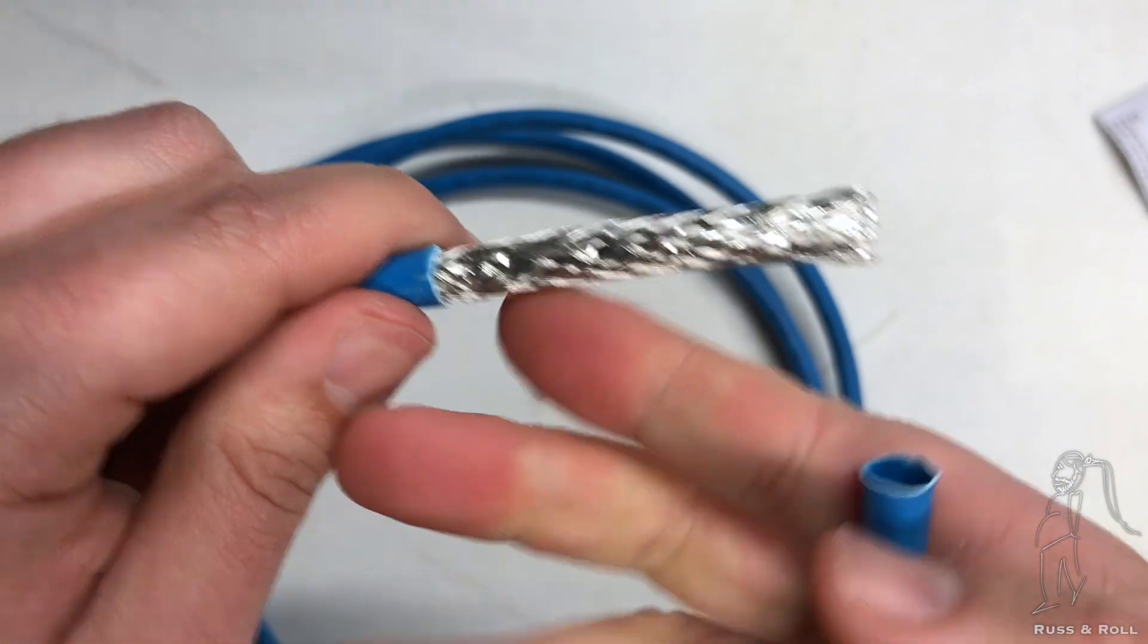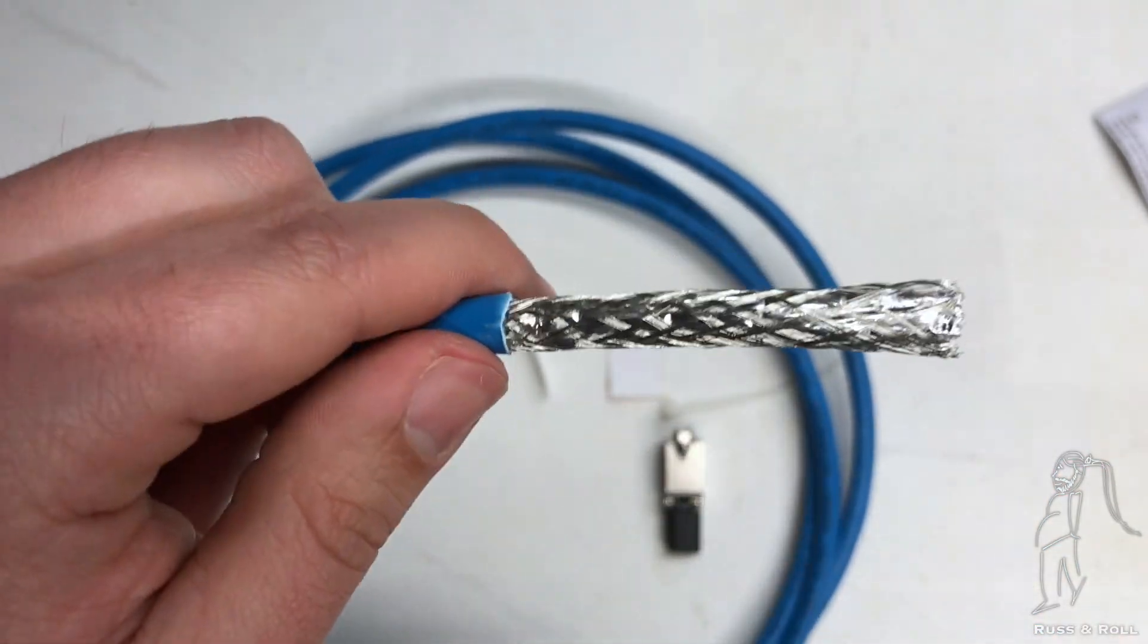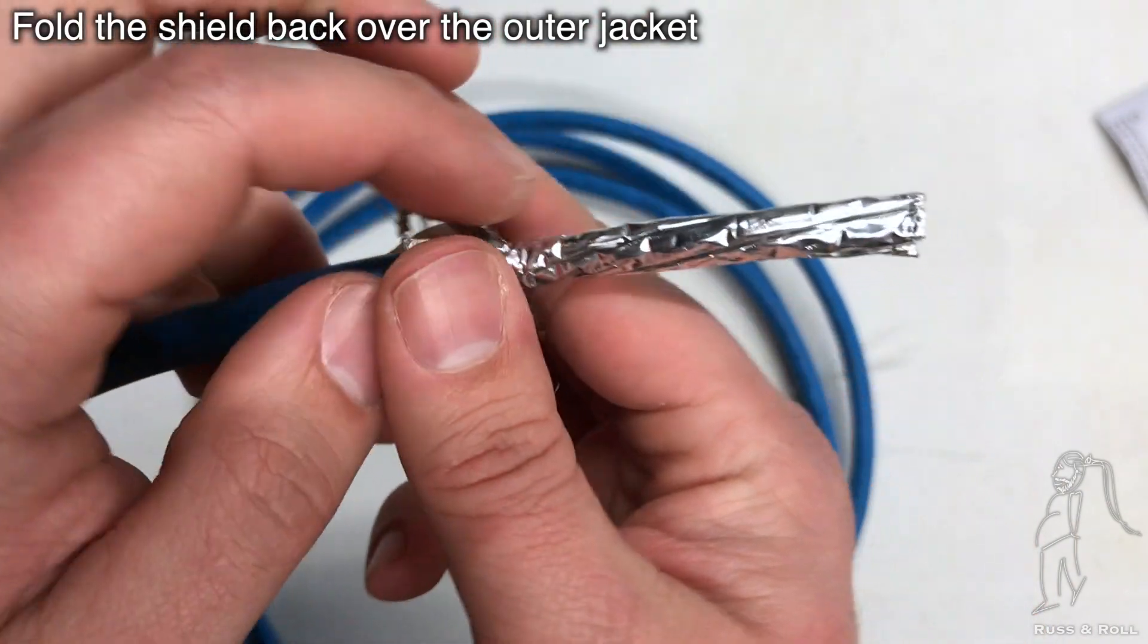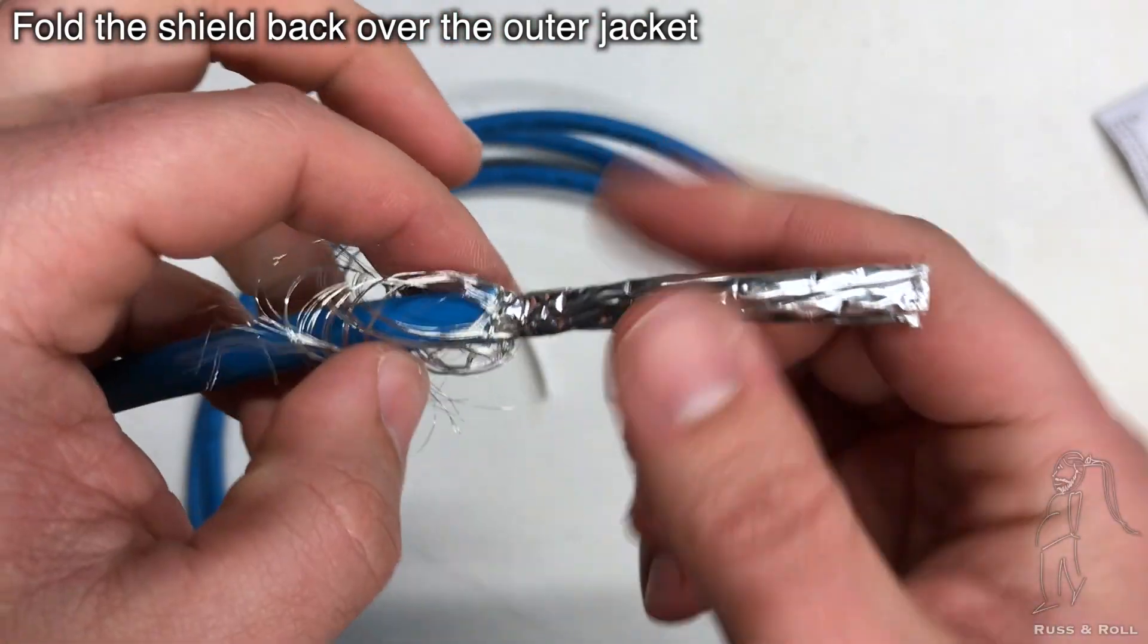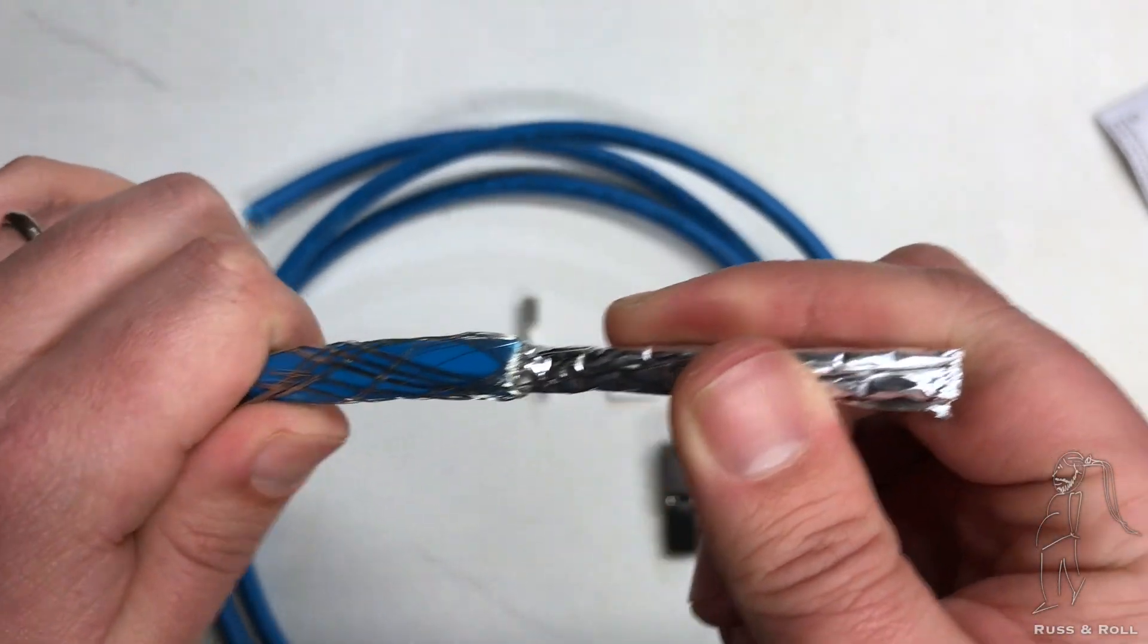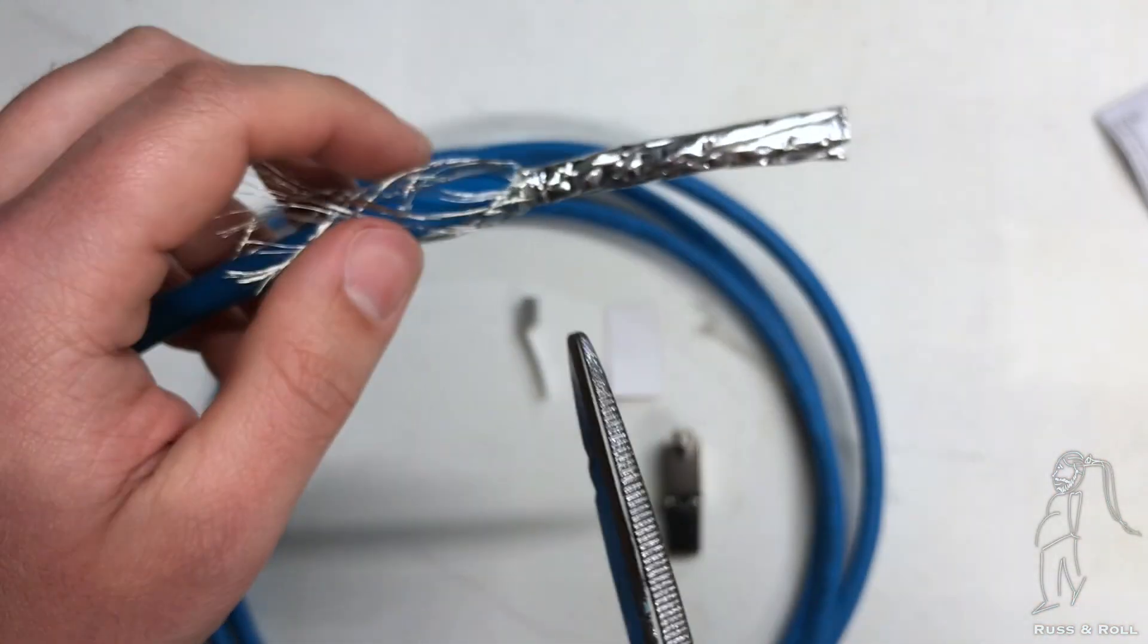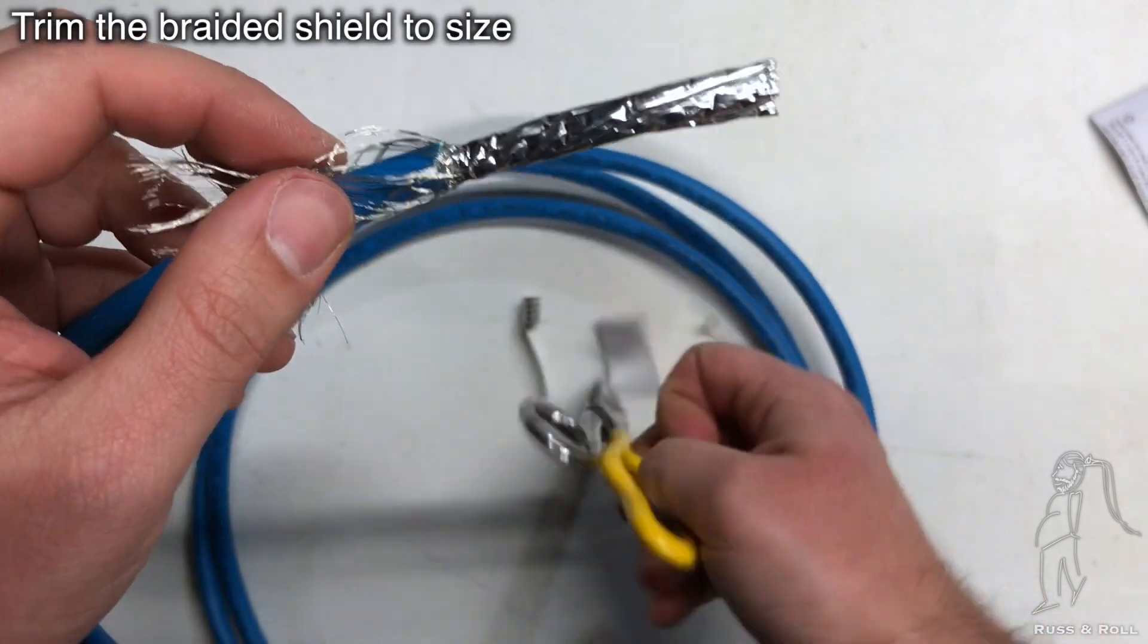And this is going to break the outer jacket so that we can pull it off without damaging what's inside. If you've done this correctly, your braided shield will still be all in one piece. Now what we need to do is push this braided shield back over itself and fold it back over the outer jacket of the cable. Just like that. I'm going to smooth it down a little bit.